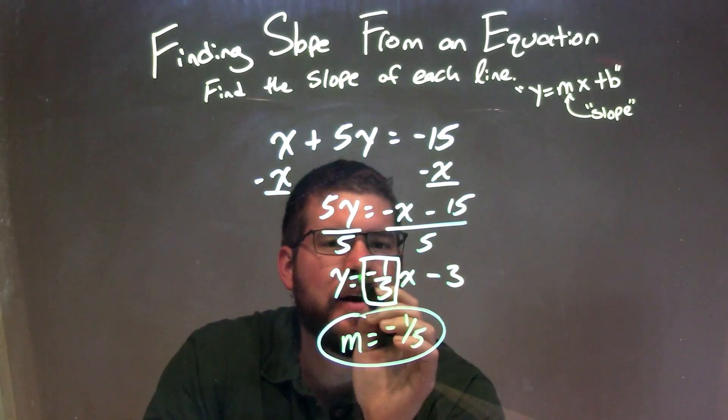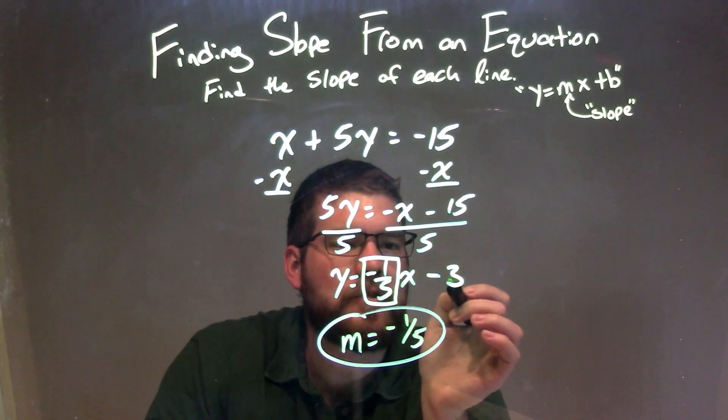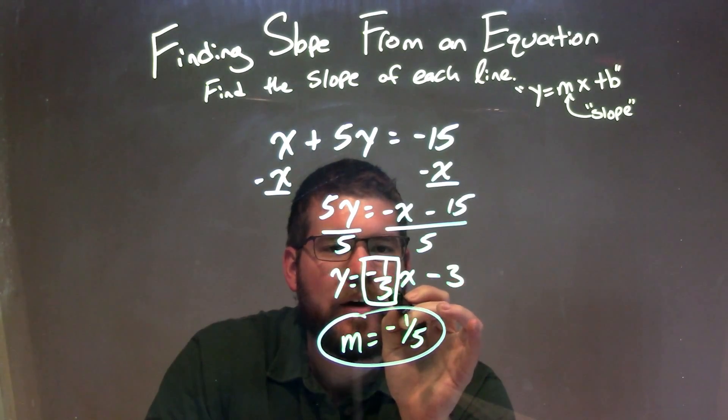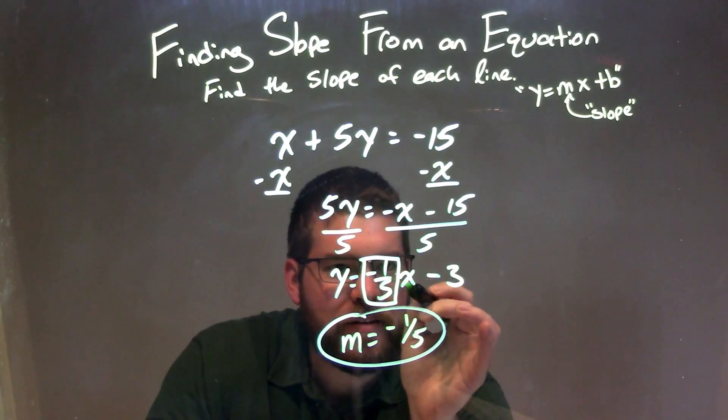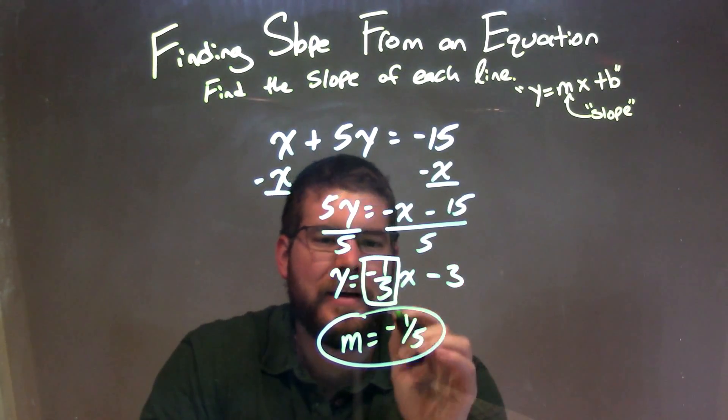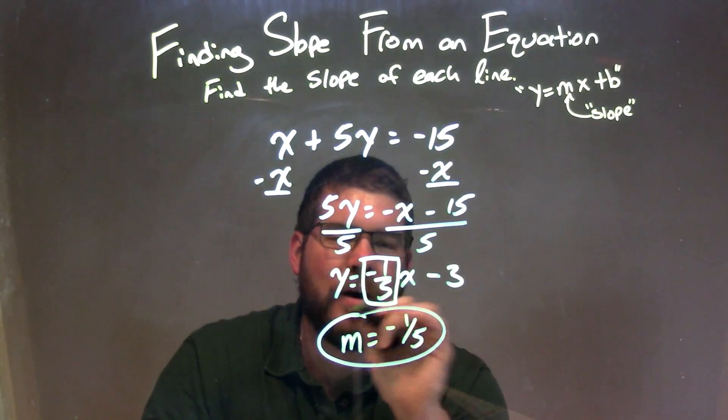This gives me y isolated equals negative 1 fifth x minus 3. That's our slope intercept form, y equals mx plus b. Our m value is negative 1 fifth. It's the coefficient in front of x. Write it down here. And our final answer and slope is m equals negative 1 fifth.